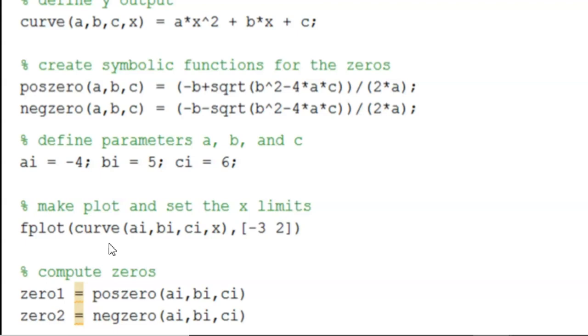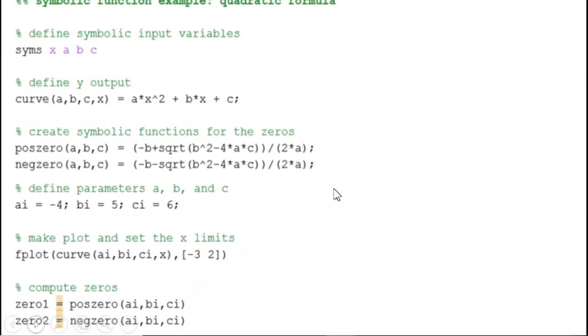Now, I use the fplot command to plot the function. I can only have one independent variable which is x. The other inputs are fixed parameters, the numbers that I just declared. The result of this command is shown here.